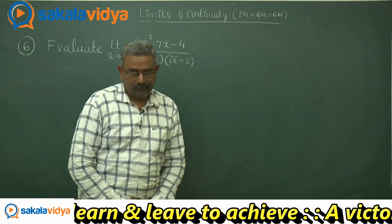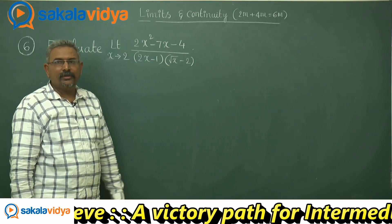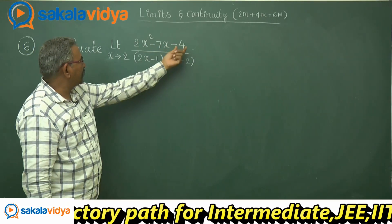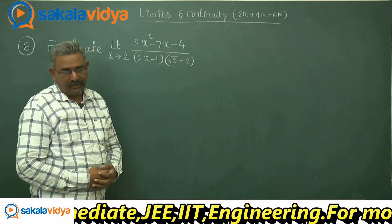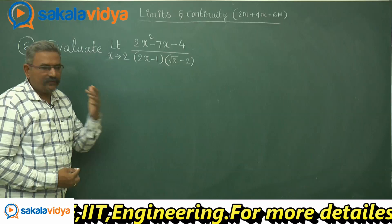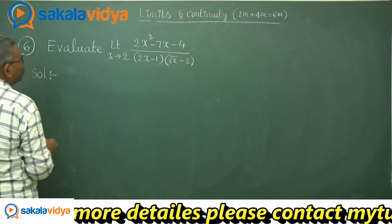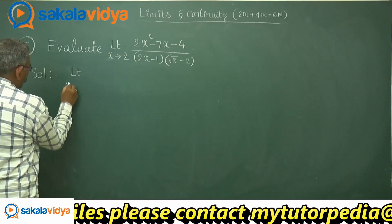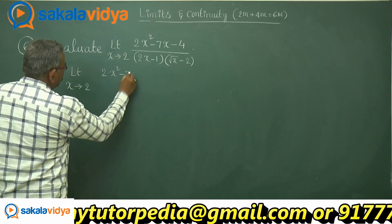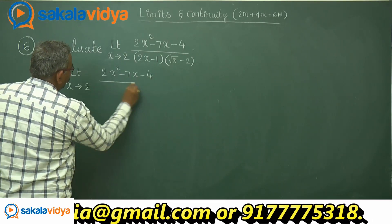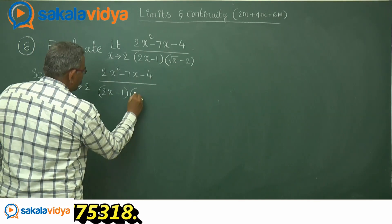Let us solve one more problem. Evaluate: limit x tends to 2 of (2x² minus 7x minus 4) upon (2x minus 1) multiplied by (√x minus 2).